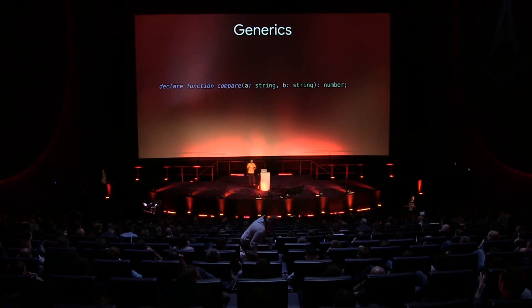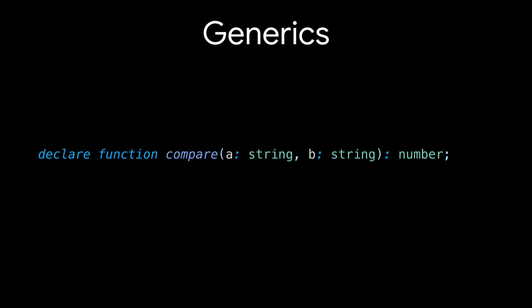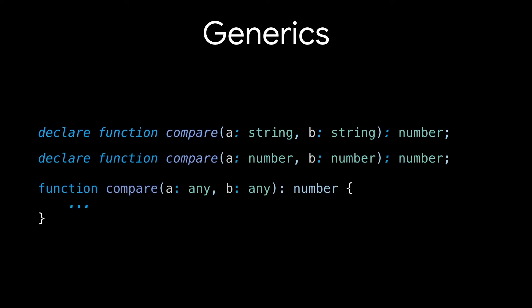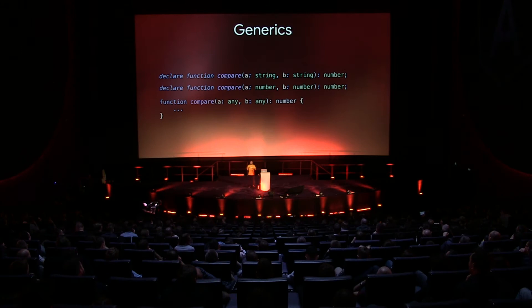Let's start with generics. Say you have a function called compare, and you want to compare A and B which are strings and return some kind of number. Now you want to expand this to compare numbers as well. You can do function overrides — a compare for strings, another for numbers — and have a fallback that handles all cases with A and B of any.